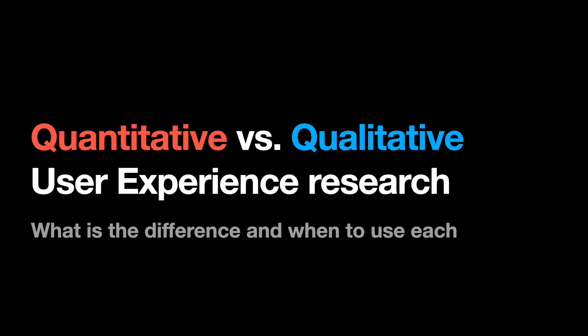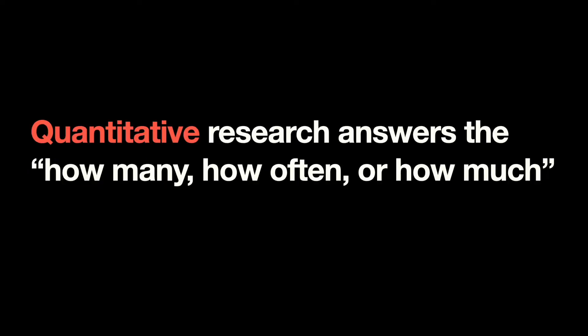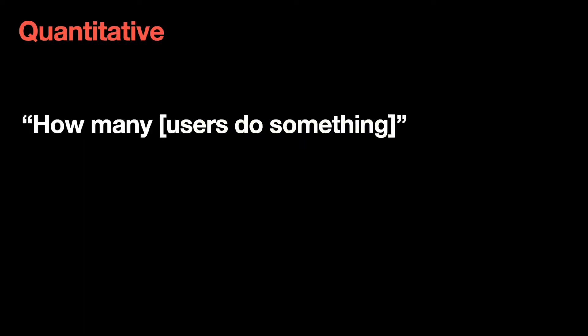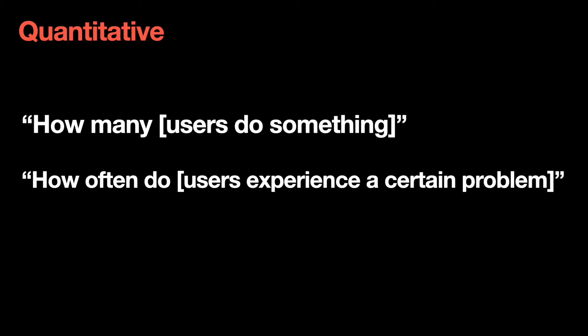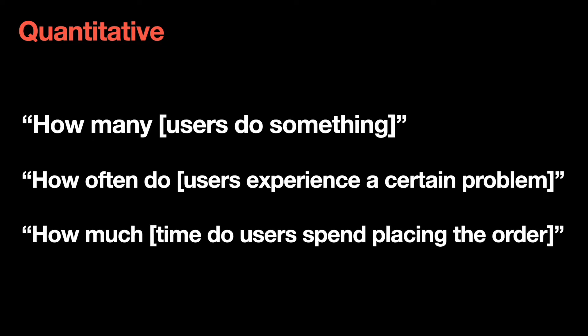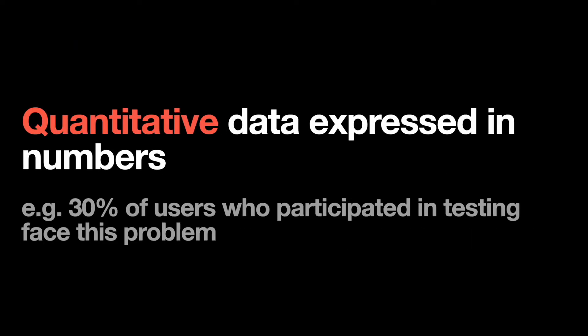Quantitative research is used to understand what is happening. This kind of research helps us identify problems. Quantitative research answers the 'how many,' 'how often,' and 'how much' questions — how many users do something, how often users experience a certain problem, how much time do users spend doing something. In quantitative methods, the researcher measures user behavior in a way that can be quantified, with data expressed as numbers.